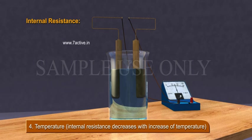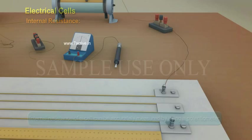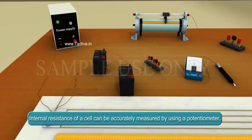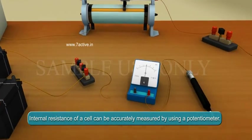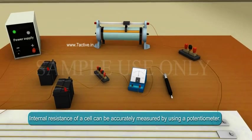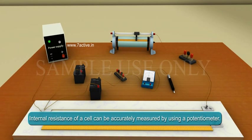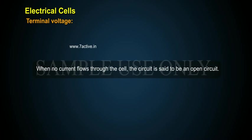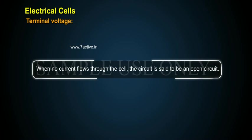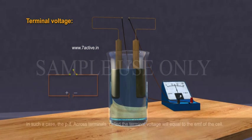Internal resistance decreases with increase of temperature. The internal resistance of a cell can be accurately measured by using a potentiometer.